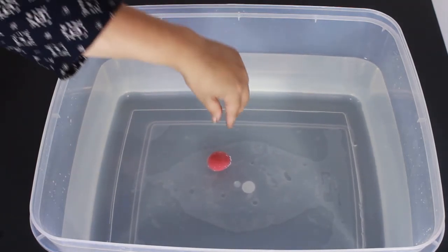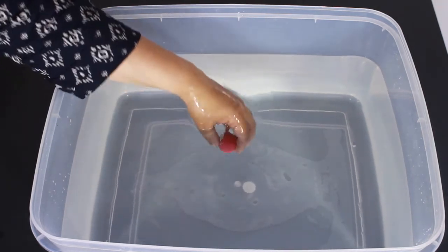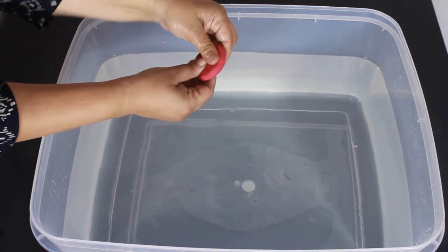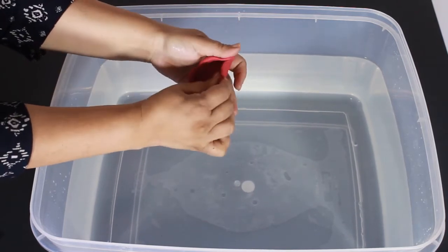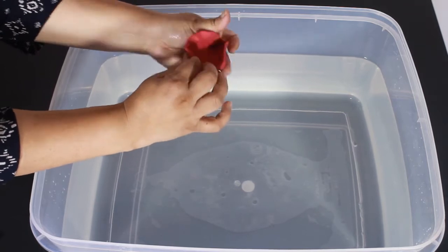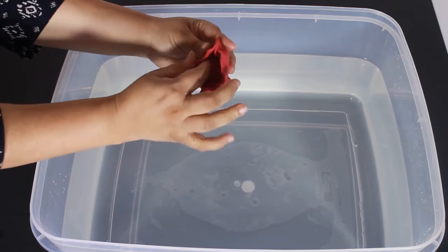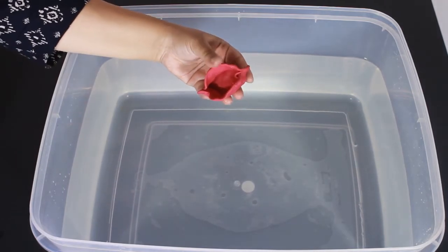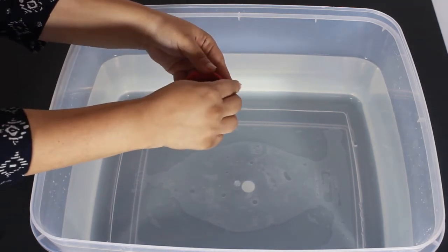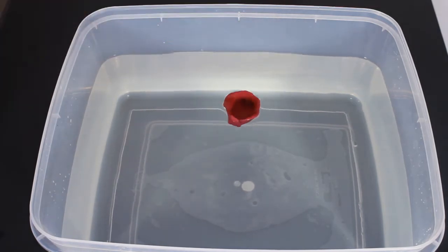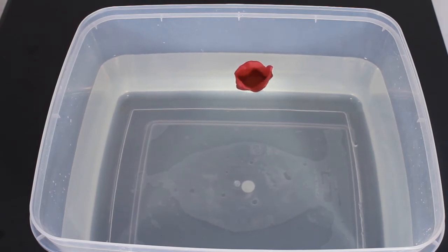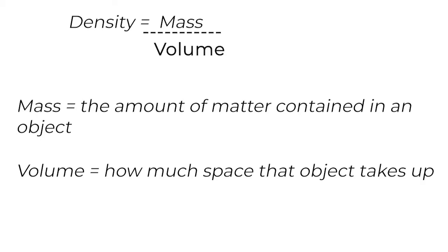Now we will try changing the volume of the clay. That is change the space taken up by the clay. We will make it in the shape of a boat. Will it sink now? The clay ball was compressed and did not have any air to hold in it and hence it had more density. So changing the mass or volume can affect the buoyancy of the object.